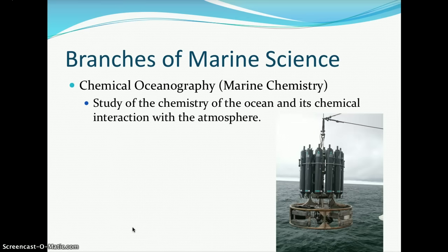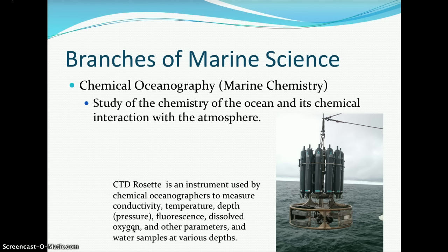Then we'll dive into chemical oceanography, which is marine chemistry. We'll study the chemistry of the ocean and its chemical interactions with the atmosphere, because the ocean and atmosphere have very important interactions that affect what goes on on land. In the diagram you can see a CTD rosette — conductivity, temperature, and density. The CTD rosette is an instrument used by chemical oceanographers to measure conductivity, temperature, and depth, and can also measure fluorescence, dissolved oxygen, and other parameters of water samples at various depths.